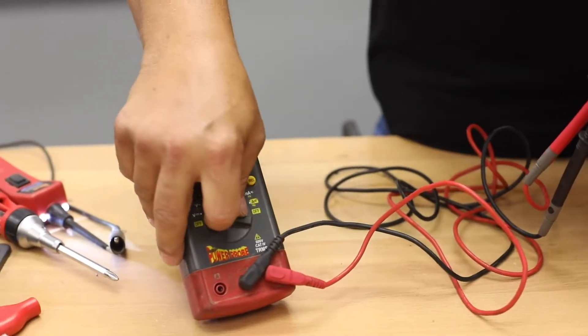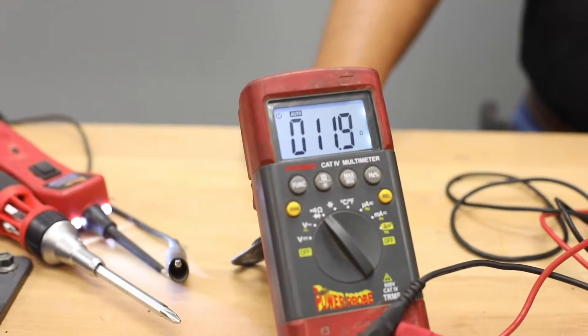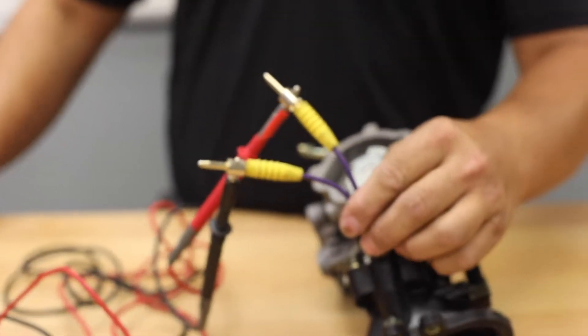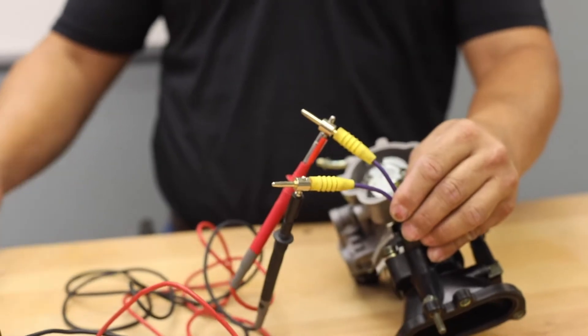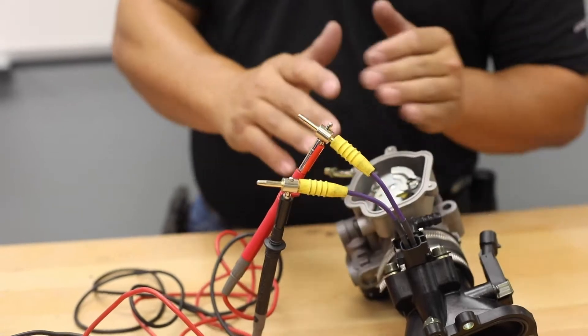You should come up with 12 ohms, plus or minus 2 ohms. So you could have 10 ohms, 12 ohms, or 14 ohms.